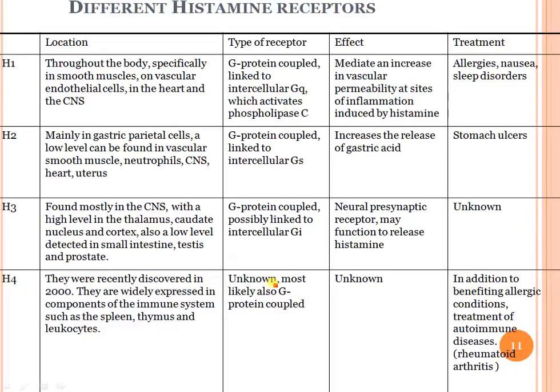There is also an H4 receptor, whose function is not fully known but is most likely a G protein-coupled receptor. H4 was recently discovered in 2000 and is widely expressed in components of the immune system such as the spleen, thalamus, and leukocytes.